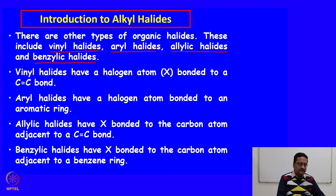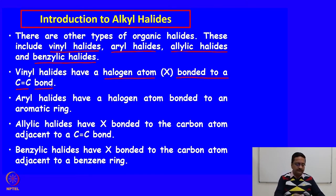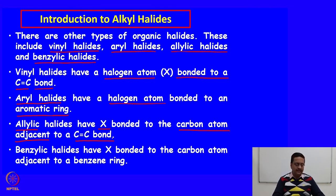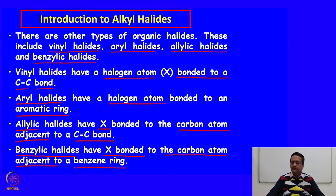Vinyl halides have the halogen atom bonded to a C=C double-bonded carbon, that is, bonded to an sp2 hybridized carbon. Aryl halides have the halogen atom bonded to an aromatic ring — if it is PhX, we call it an aryl halide. The third type is allylic halide, where the halogen is bonded to the carbon atom adjacent to a C=C double bond. Similarly, benzylic halides have the halogen bonded to the carbon atom adjacent to the benzene ring.